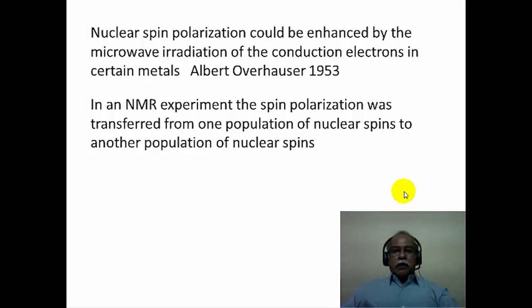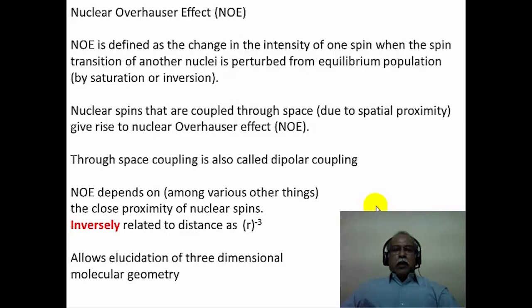In the NMR experiment, we do not deal with electron spin polarization. We talk about spin polarization transfer from one population of nuclear spins to another—for example, between carbon-13 and proton, or proton and proton. NOE can be defined as the change in the intensity of one nuclear spin when the spin transitions of another nucleus are perturbed from equilibrium population.